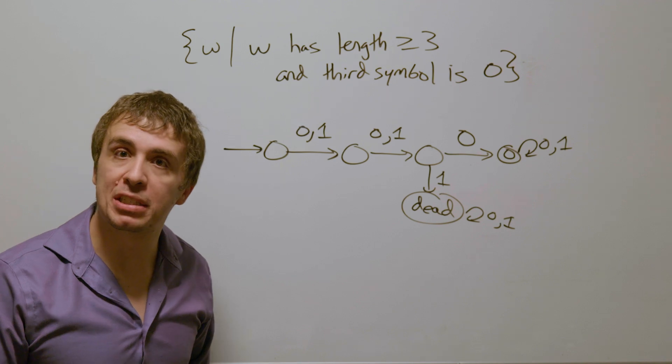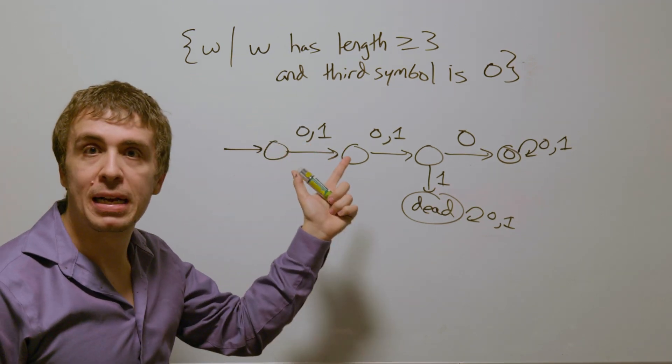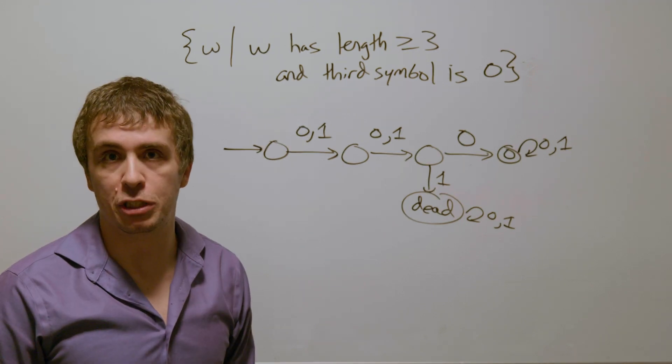Therefore, this is a deterministic finite automaton for this language, which is the set of all strings which have length at least three and the third symbol is zero.